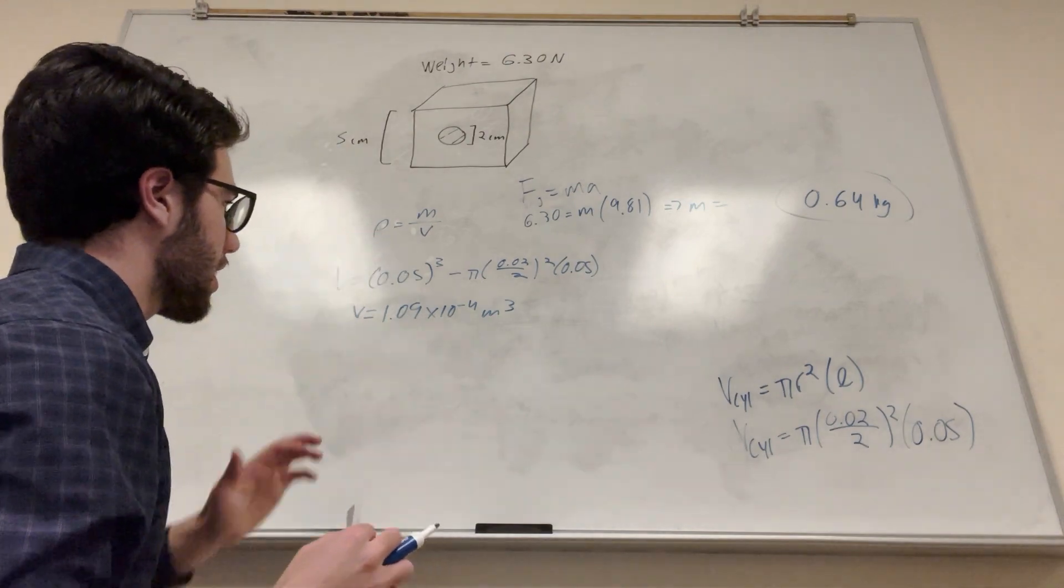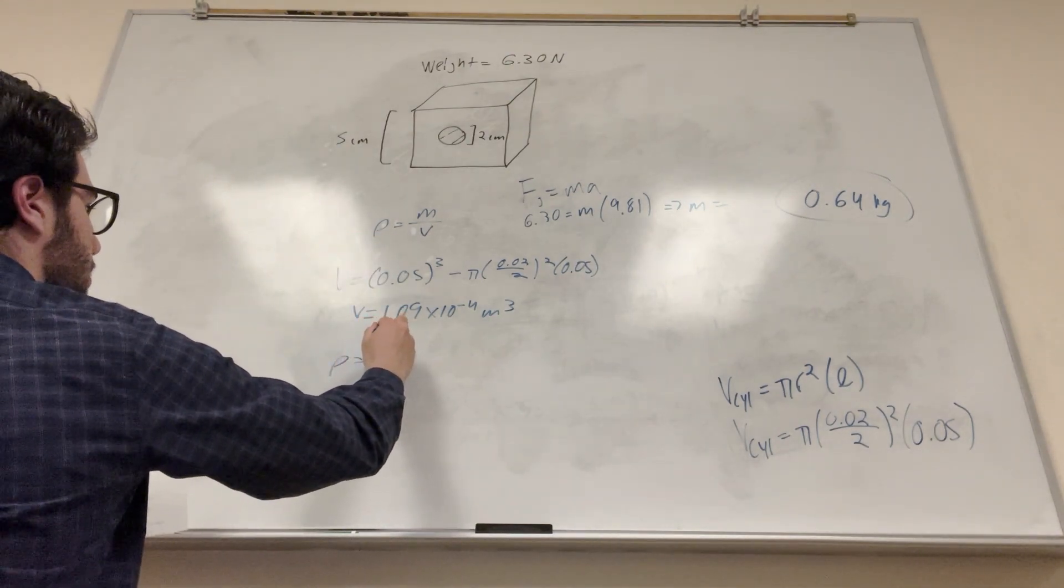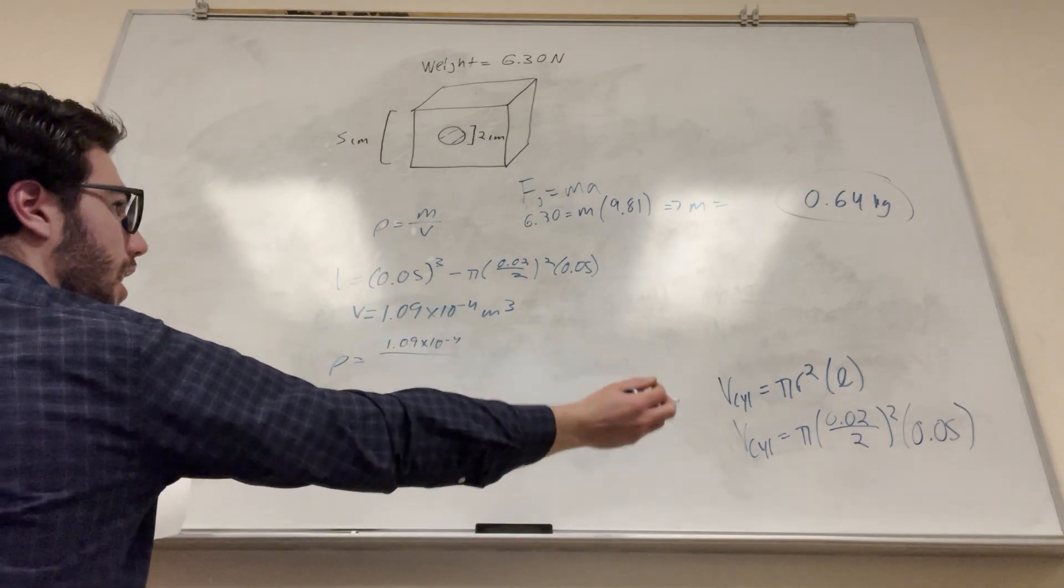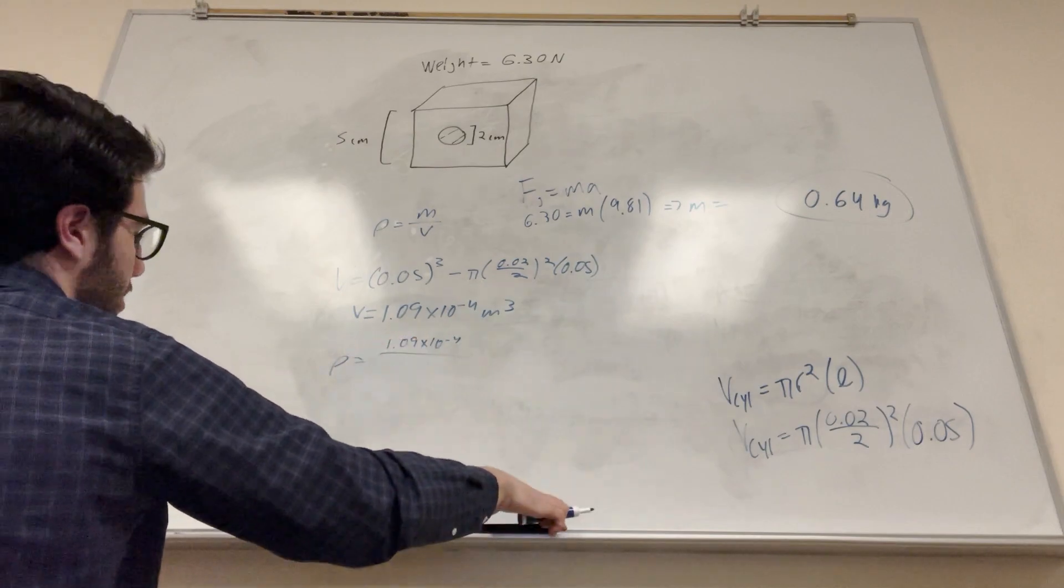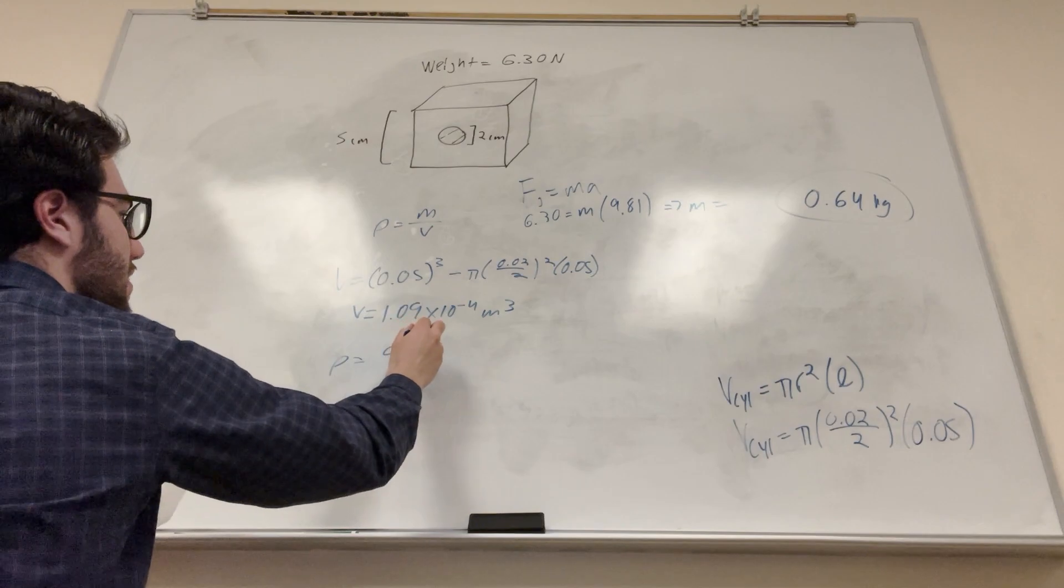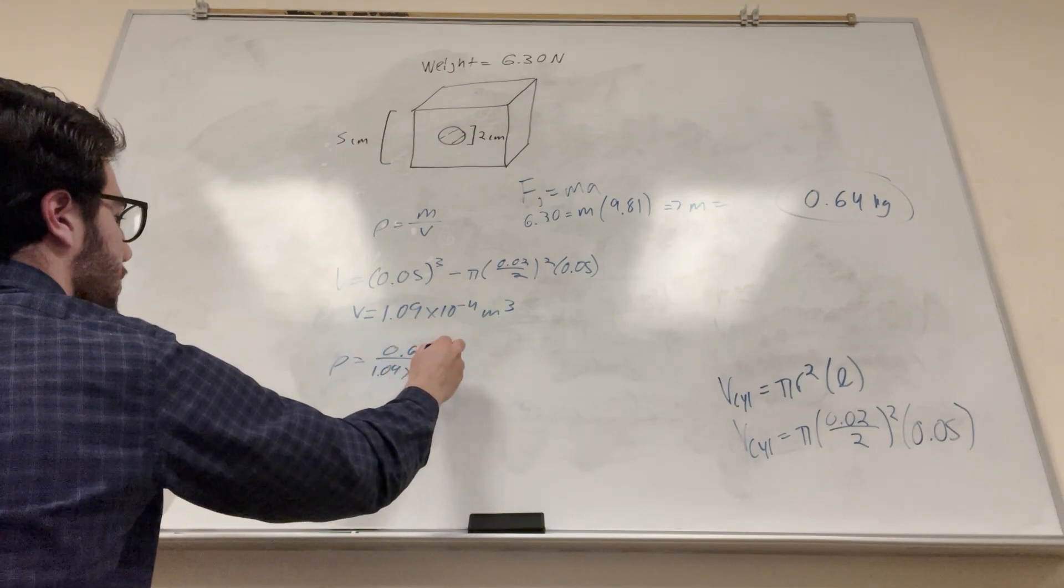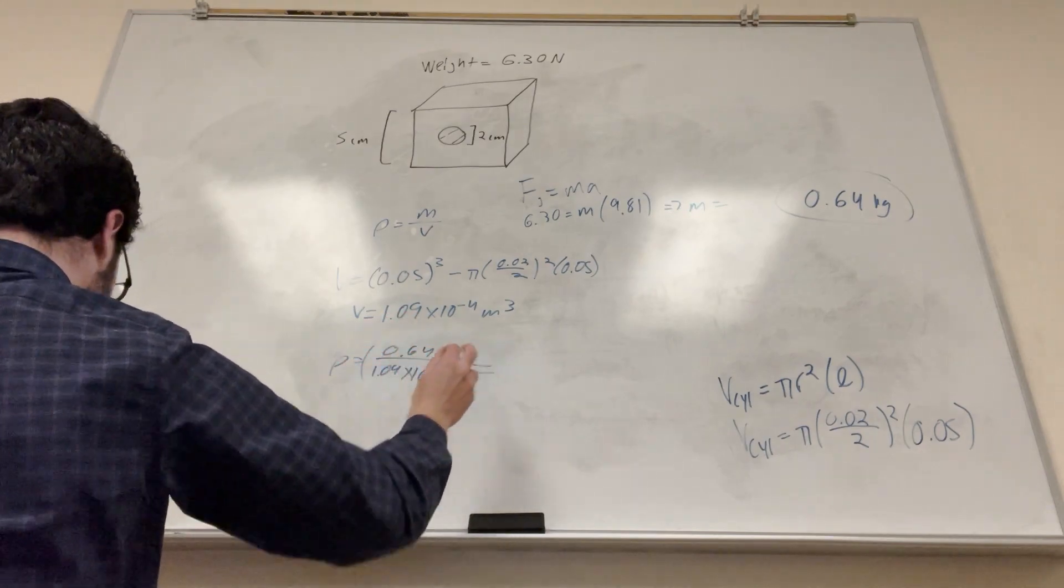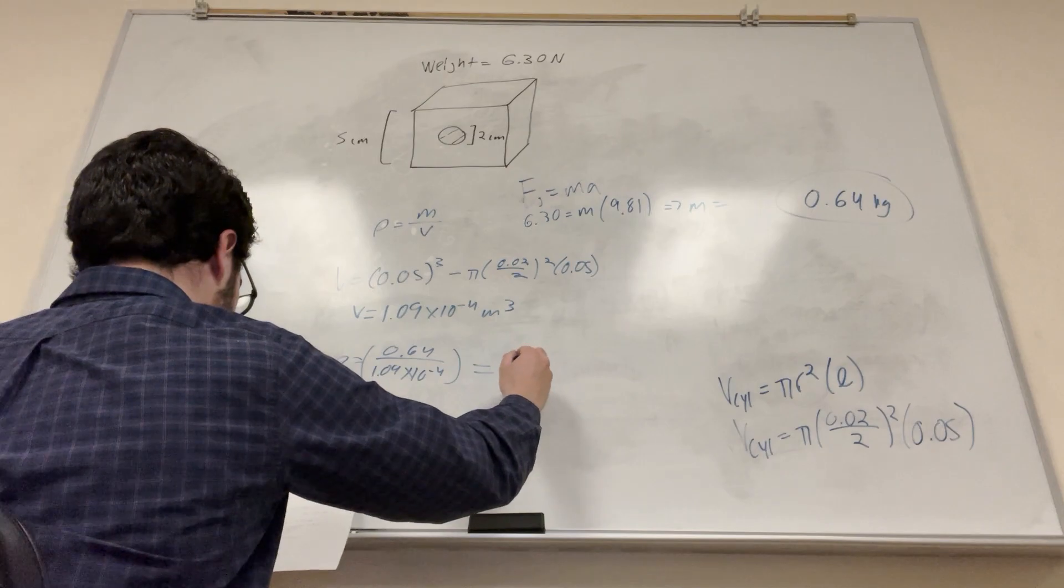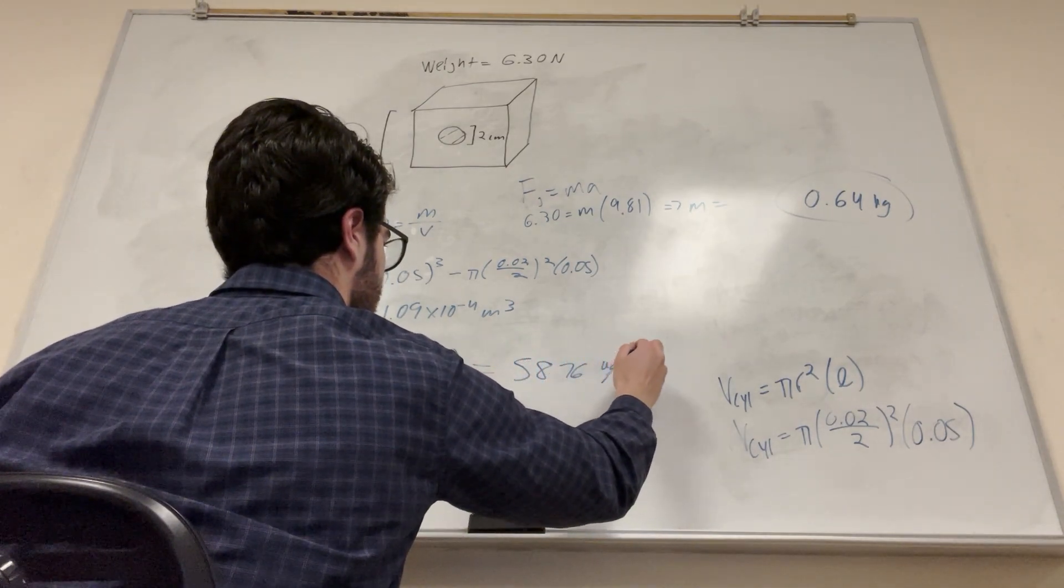So then we just have to plug it into this formula. So density is equal to... Oh, I just did it upside down. I'm making all sorts of mistakes today. 0.64 divided by 1.09 times 10 to the negative 4. You're going to get that it's going to be equal to 5,876 kilograms per meter cubed.